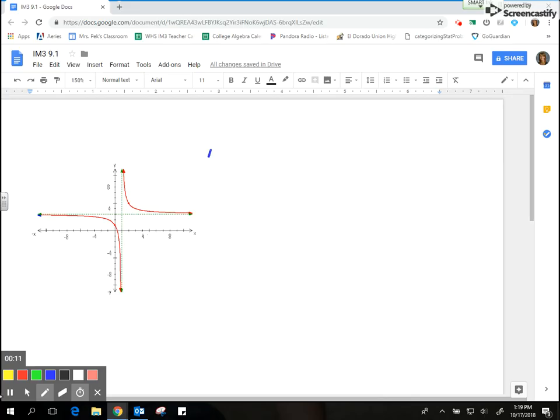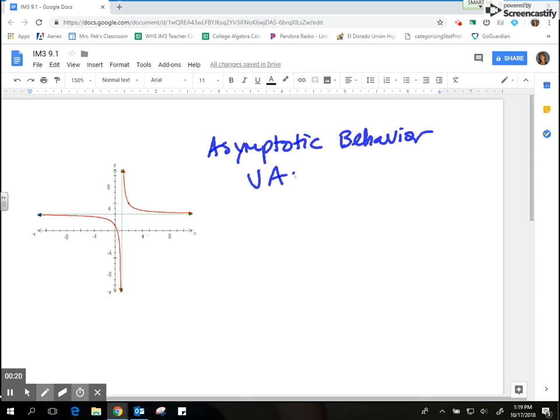Asymptotic behavior is really about the vertical asymptotes. In this case, we only have one vertical asymptote, which is at x equals 1. When we talk about asymptotic behavior, it's similar to end behavior in its notation.